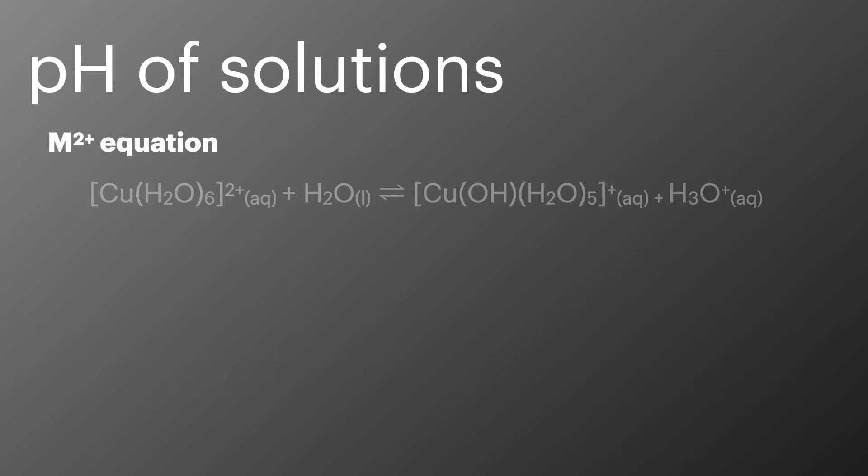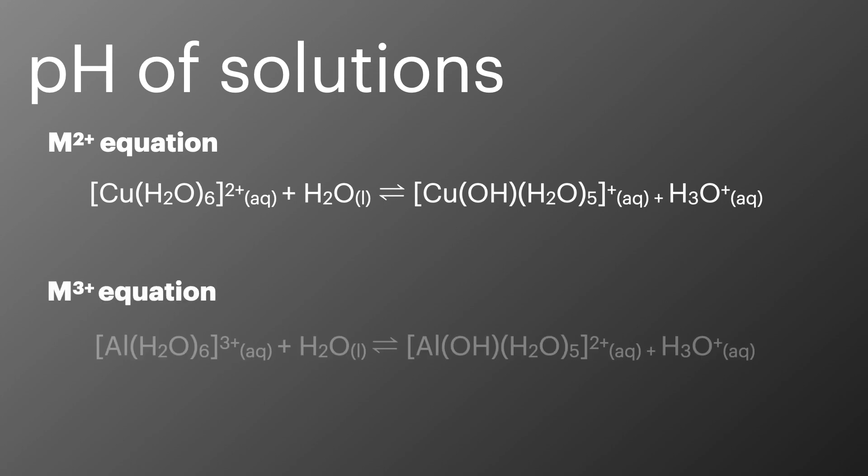You can see here the two equations which show the process happening. It's important to note the correct charges for the metal complexes and that these reactions are equilibriums. In the reaction the complex is in solution surrounded by more water molecules and produces H3O+. This is shown because the H2O has gained the H+ ion from the complex. In some cases of acid dissociation we sometimes remove the water from both sides of the equation and just show the H+ on the products.